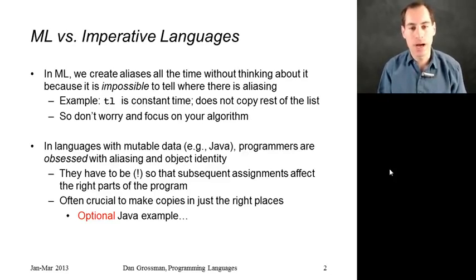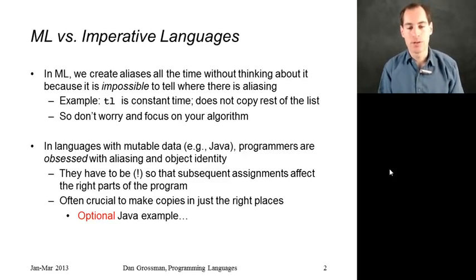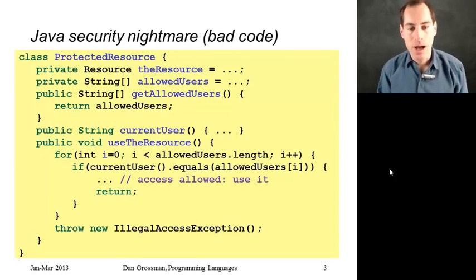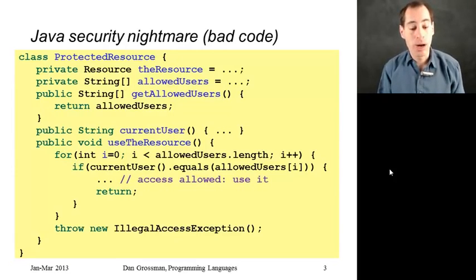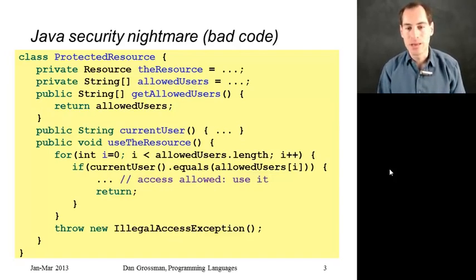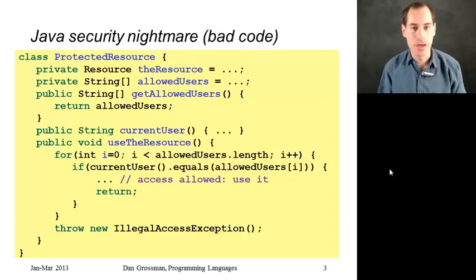But in languages like Java, we really have to be careful about where we create aliases versus where we make copies. The example I have here I've simplified so it fits on the slide, but this is the exact idea behind bugs that until they were fixed caused real security violations in real Java libraries, including things in the standard Java library related to class loaders and other things.